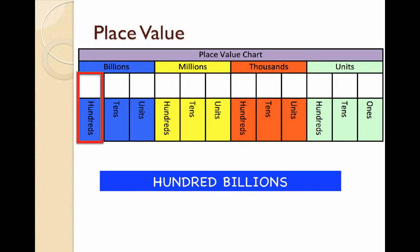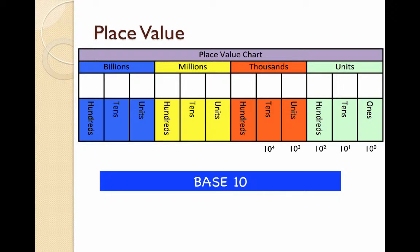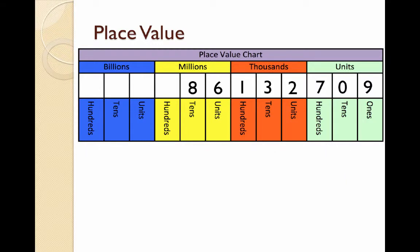You might notice a pattern to our place value chart. This is a base 10 system. We call this because each column is a different power of 10. Let's take a look at an example. I've written 86132709 into my place value chart, and I want to be able to write that number in words as well as an ordinary digit. To do that,